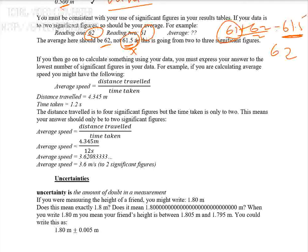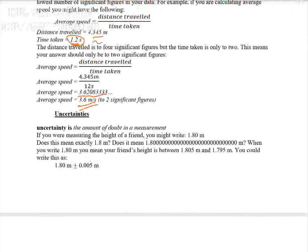The same rule applies to division and multiplication. When you divide or multiply values, your answer must be expressed to the smallest significant figure among the given values. For example, if distance has four significant figures and time has two significant figures, the velocity must be expressed to two significant figures. You divide, get a raw value, then round off to the lowest significant figure.